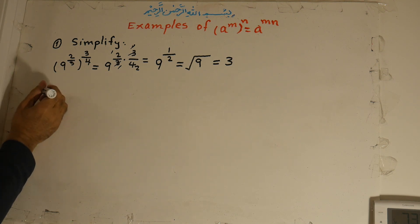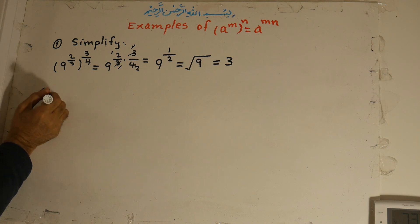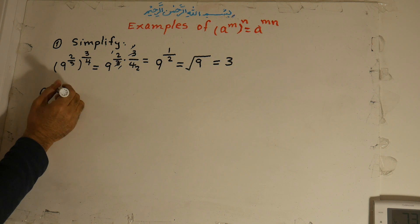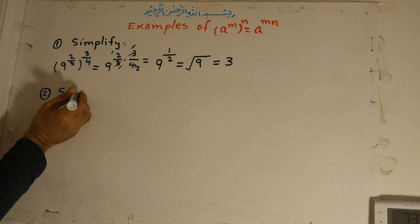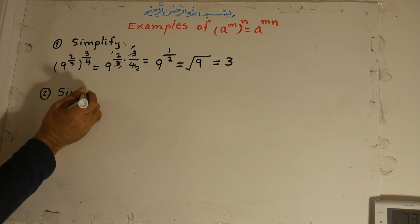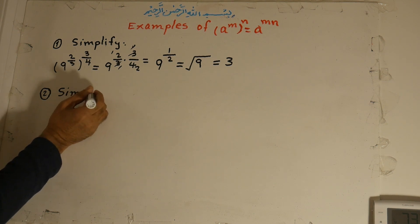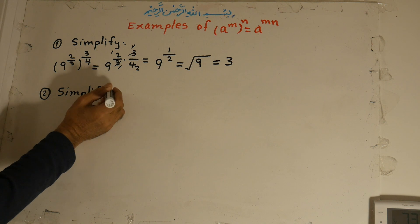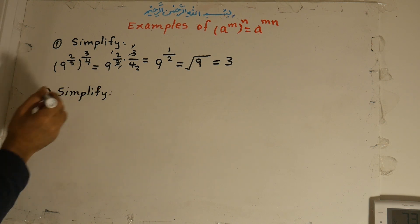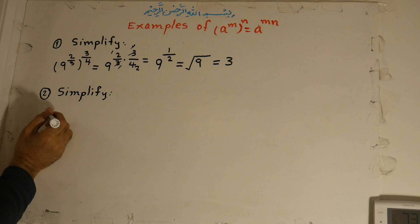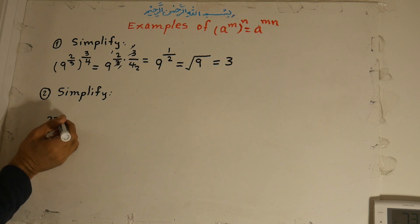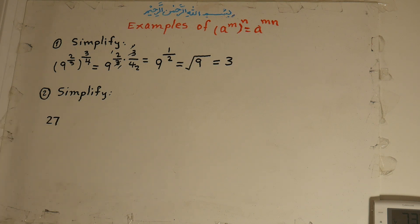Example number 2. Simplify: 27 to the power of negative 2 over 3, all to the power of 3 over... (with 25 referenced).